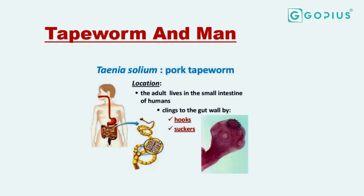That is why WHO has advised that every individual should deworm themselves every three months. The tapeworm can be found in cattle and in pigs. We have Taenia solium found in pigs and Taenia saginata found in cattle. Human beings consume both pigs and cattle, so if the meat is not properly cooked, the individual can get affected by eating the eggs of this tapeworm, which then begins to develop in the body of the host.